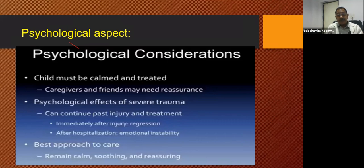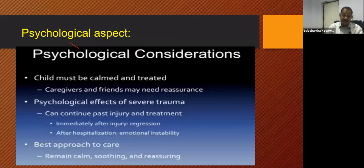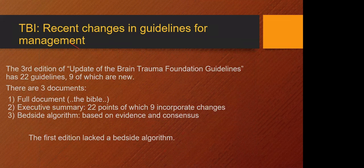The child must be calmed and treated appropriately. Caregivers and friends may need assurance. Psychological effects of severe trauma can continue past injury and treatment. Immediate after injury causes regression, and after hospitalization, emotional instability. The best approach to the care of an injured child and parents is to remain calm, soothe, and reassure. At this point, a reminder was given that only 10 minutes remained.